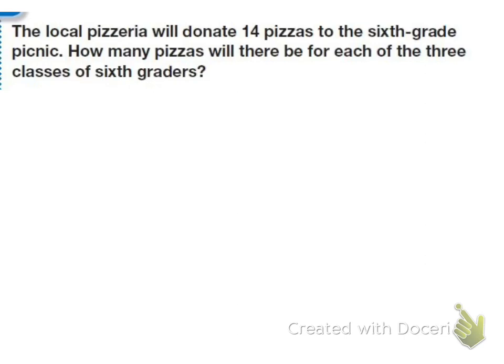So I know that we have 14 pizzas and I need to divide them among the 3 classes. So we think, well, 14 divided by 3 is 4. 3 times 4 is 12. 14 minus 12 equals 2. So I know that each class is going to get 4 whole pizzas.